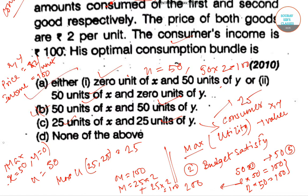Because in the second option our utility is only 25, utility is not maximized there. So the first option is our correct option and option number A is the correct answer.